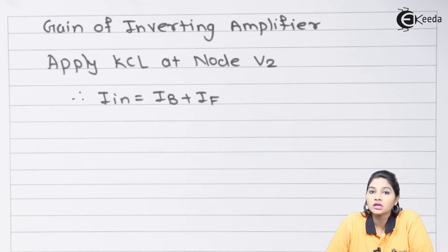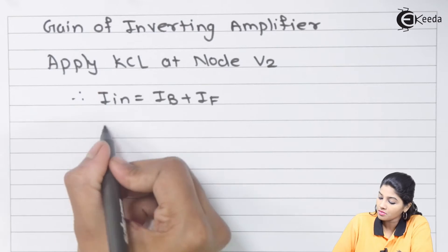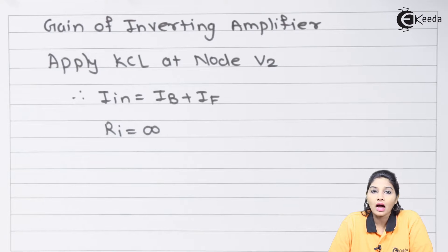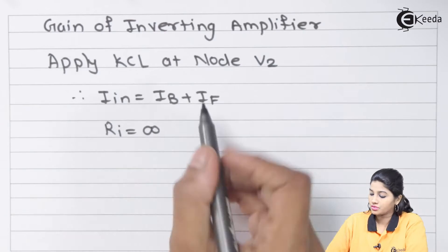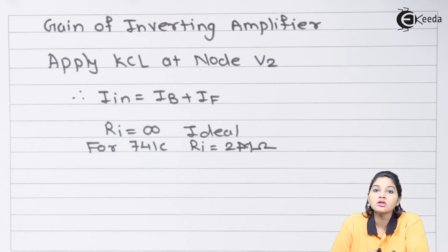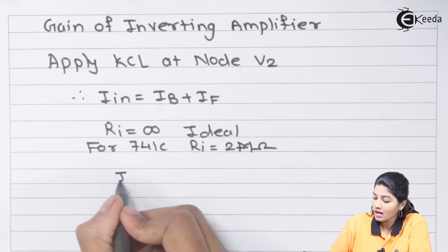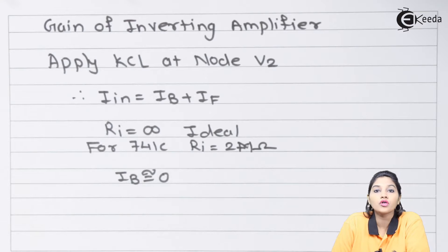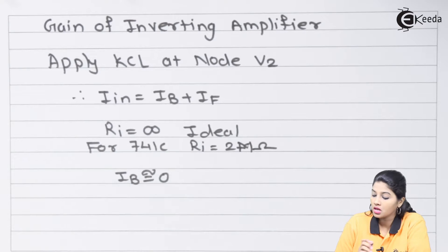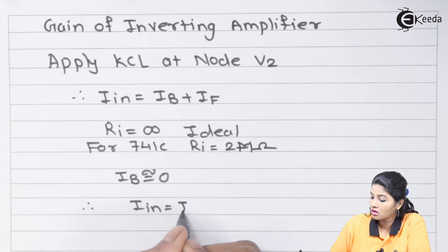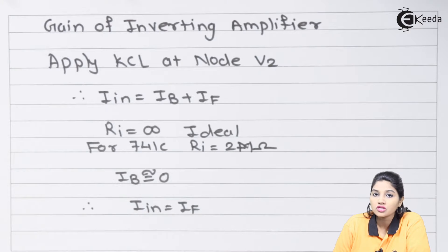If we consider the op-amp as ideal for analysis purposes, the gain is very high (infinity) and the input resistance is also infinity, meaning R_i equals infinite. For op-amp 741C, R_i is approximately 2 megaohms. Since the input resistance is very high, the input bias current I_b is approximately zero for an ideal op-amp (0.5 microampere for a practical op-amp). Therefore I_b ≈ 0, giving us I_in equals I_f.